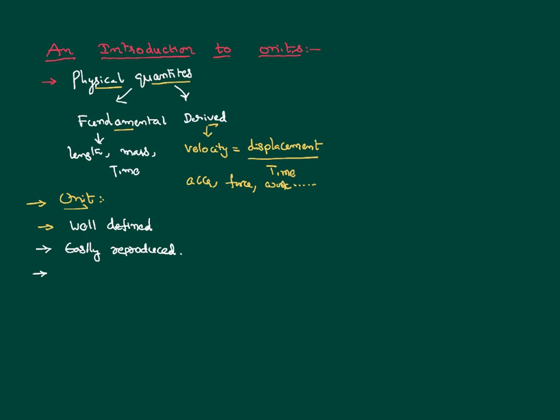The unit has to be safely stored and available for everybody, and it shall be easily accessible. We should be able to access it, and it shall be easy and cheap to reproduce. It has to be invariable — it shall not vary from person to person or place to place. Therefore, we all use the same kind of unit, and there is no confusion. Finally, it shall be acceptable to all, so that everybody can follow that unit.